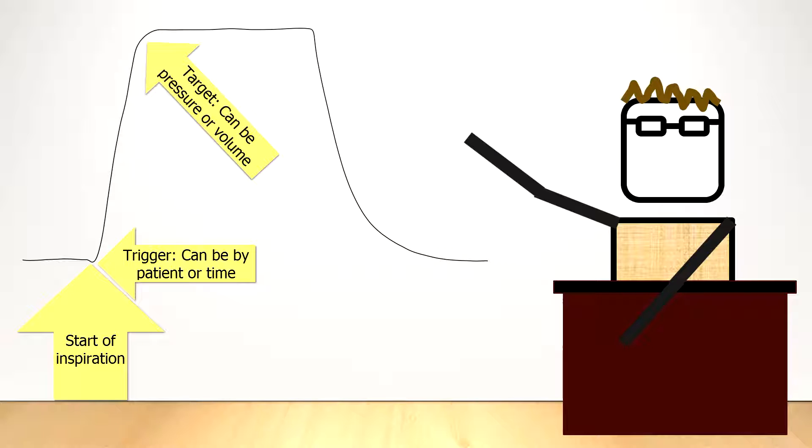Suppose you have lungs with very low compliance, or are stiff, when you try to reach the pressure target that you've set, the target may be quickly reached and much less volume is delivered as a result.